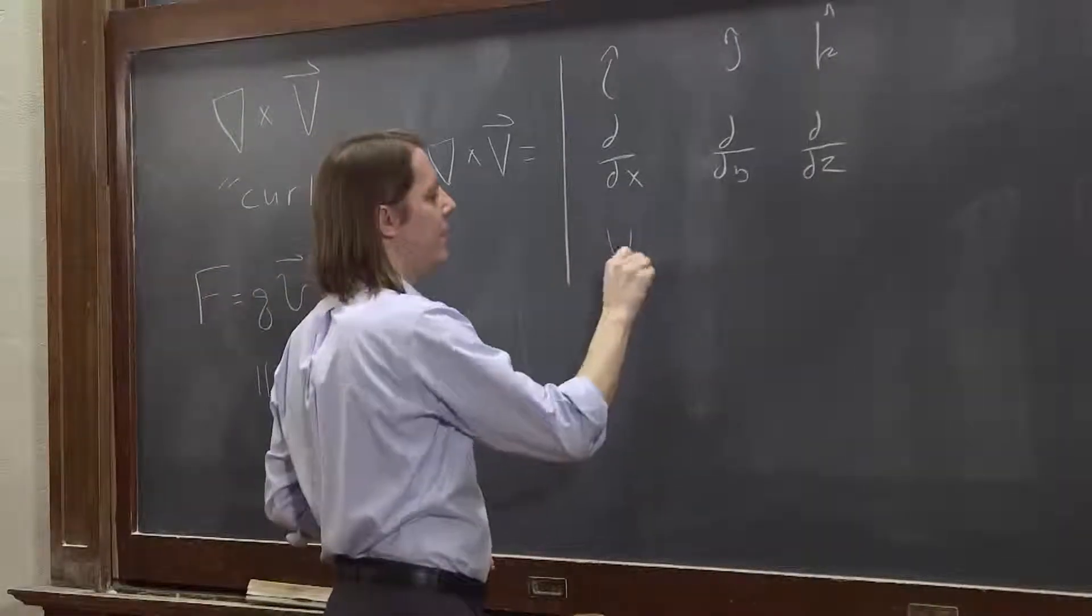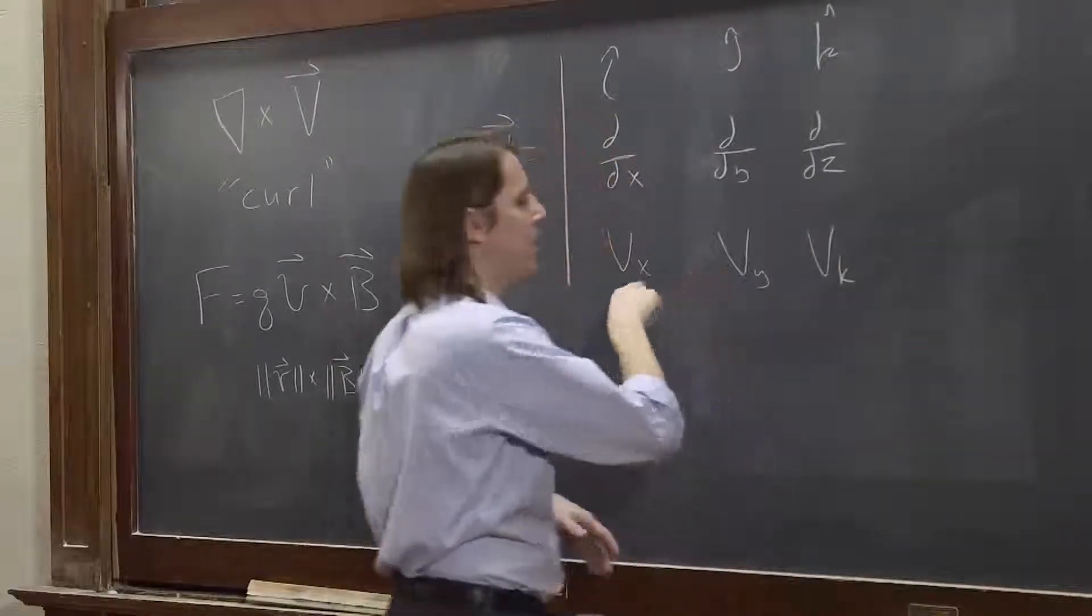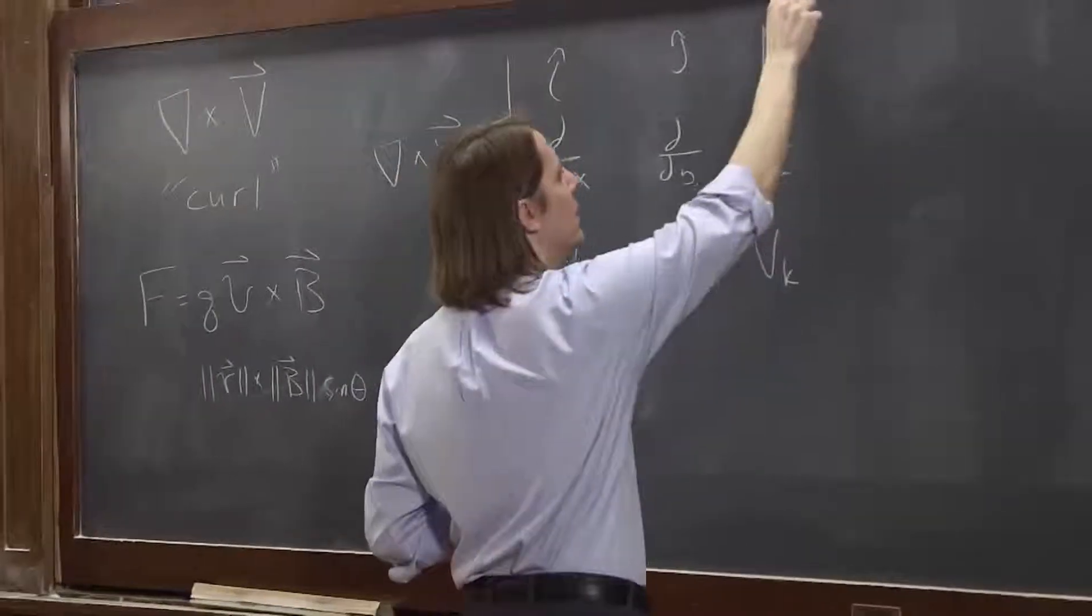In this case, it's what goes on the i hat: v_x, what goes on the j hat: v_y, k hat: v_z. Keeping in mind those can be functions of x, y, and z. Those are not constants, even though I'm writing them like that.